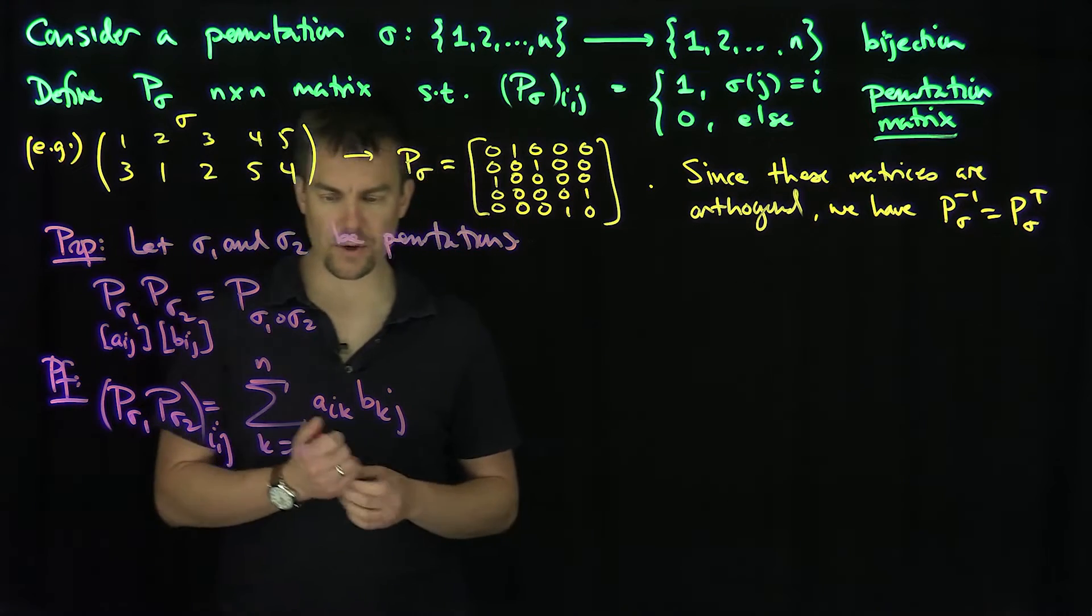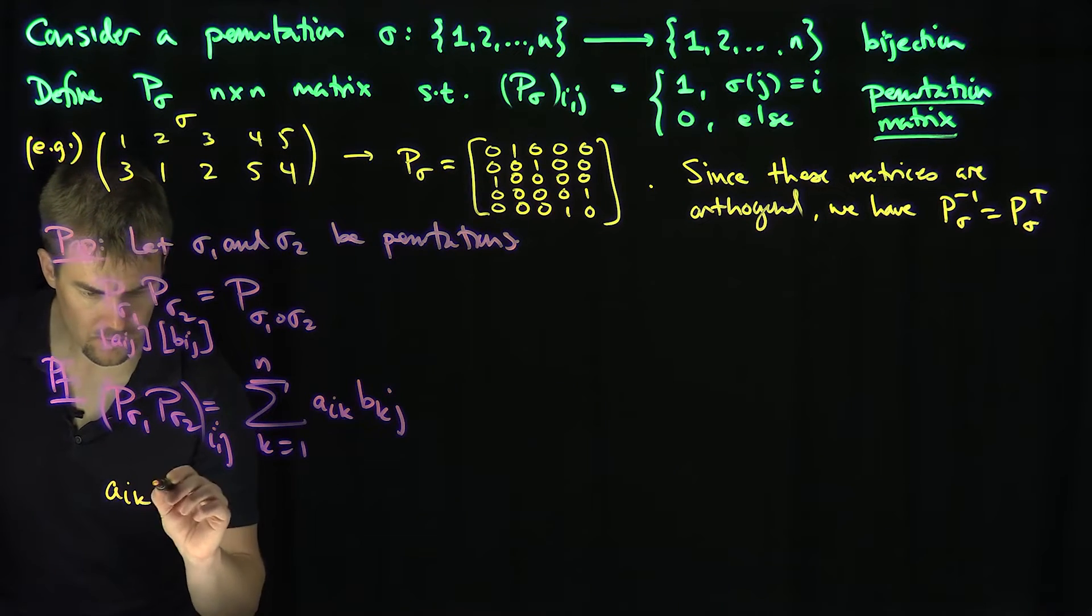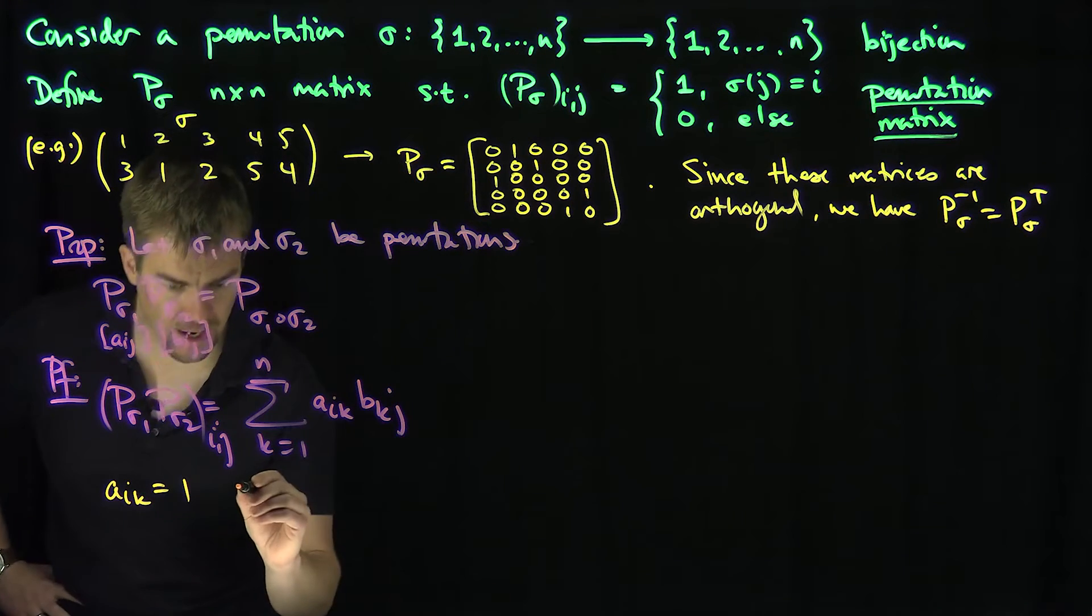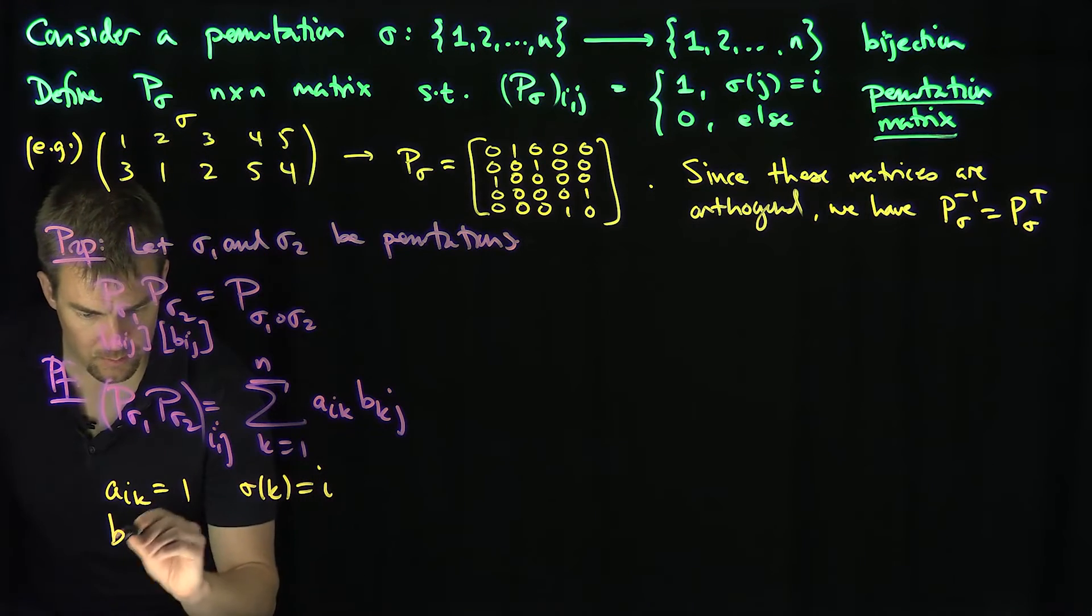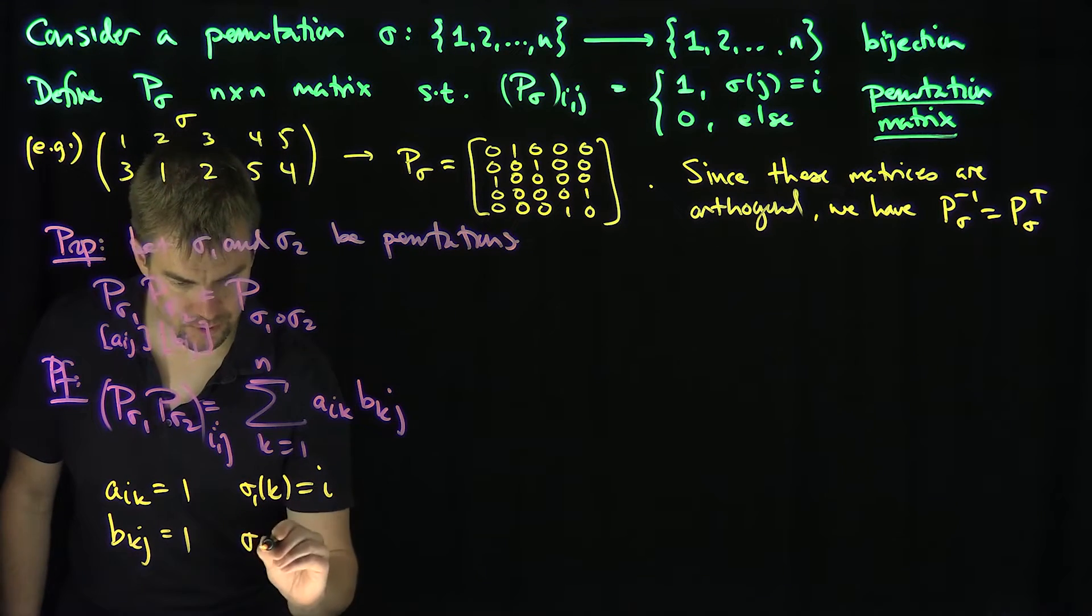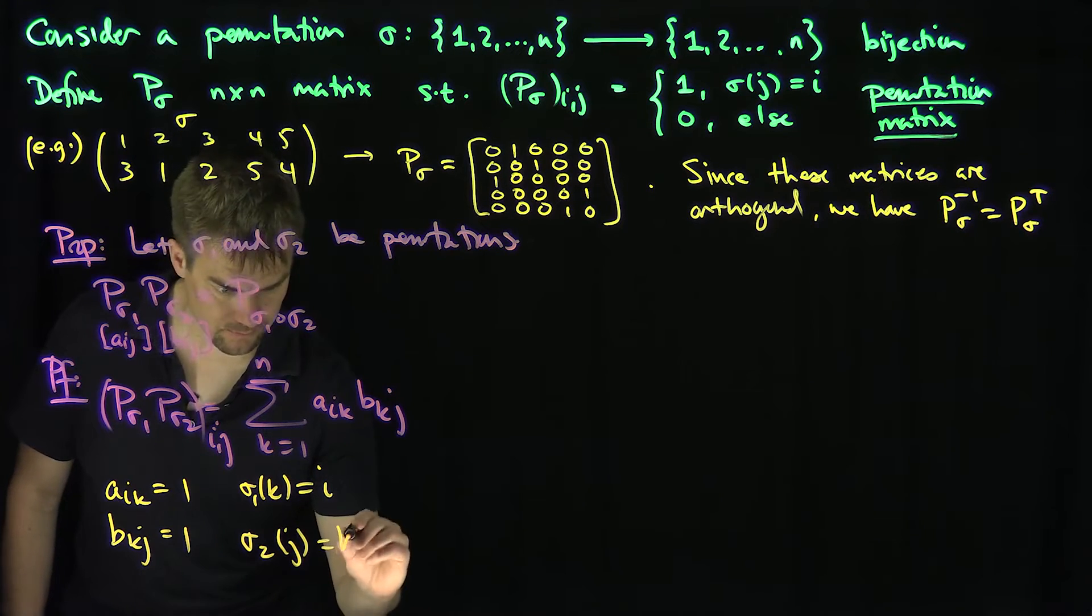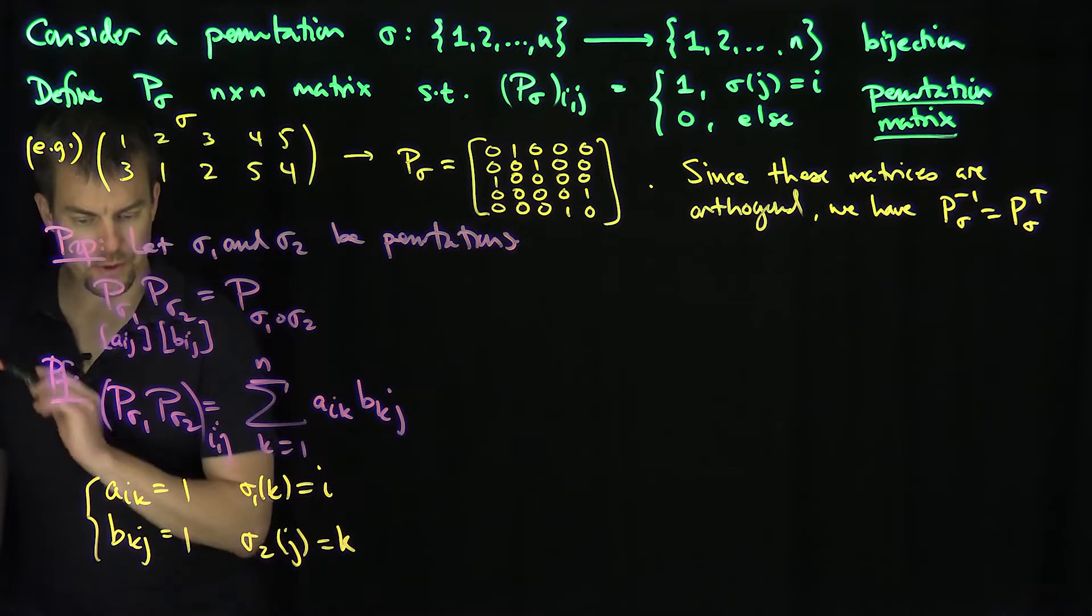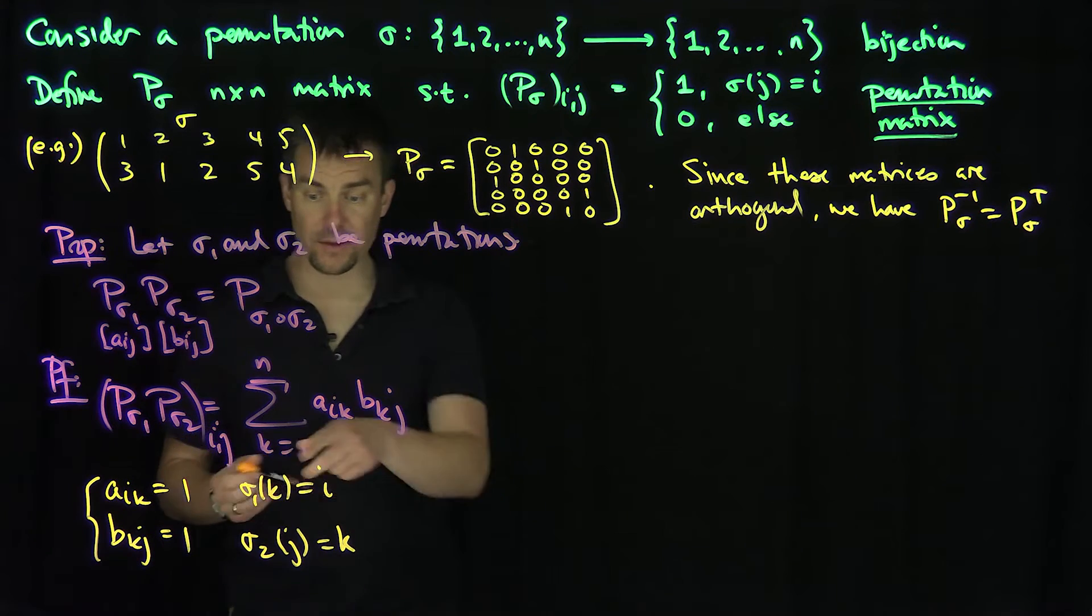And so now what do I know about these A_i_K's? So I know that A_i_K is equal to 1 only when sigma_1 of K is equal to i. And I know that B_K_j is equal to 1 only when sigma_2 of j is equal to K. So if we put these together, the only time I get an entry of 1 is when both these equations are satisfied simultaneously for that value of K.